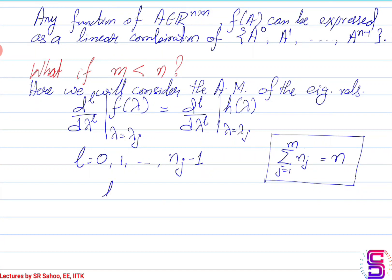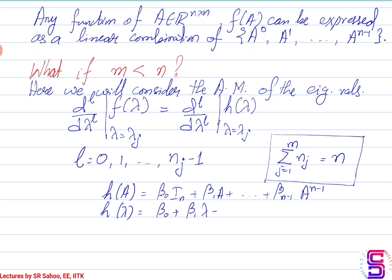To reiterate: h(λ) — which I earlier defined — is essentially beta_0 plus beta_1 λ, till beta_{n-1} λ^{n-1}. That is what it is.